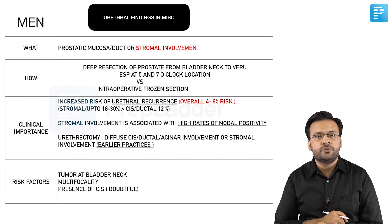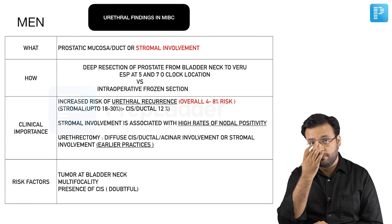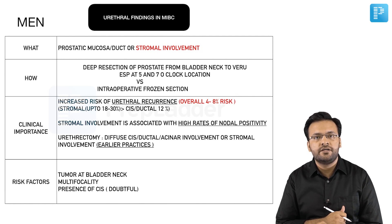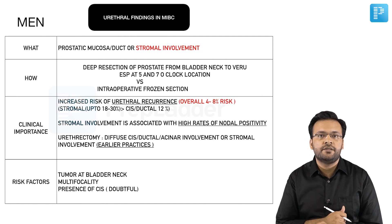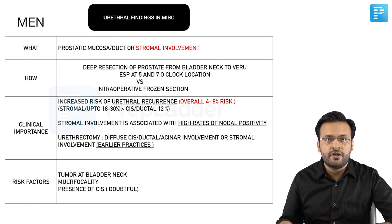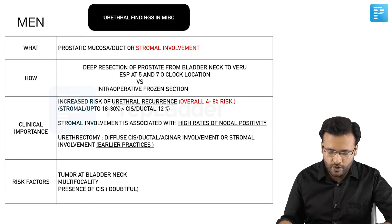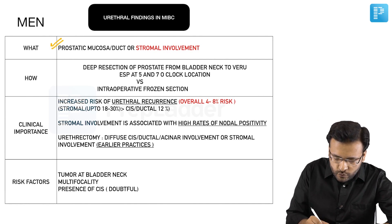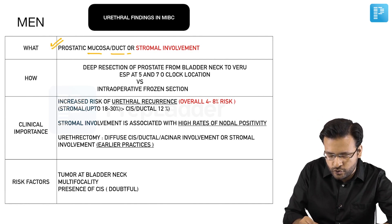In men, during TURBT, if one suspects that the patient has muscle-invasive bladder cancer or non-muscle-invasive bladder cancer that is extensive and warrants an early radical cystectomy, the clinician can choose to evaluate the prostatic urethra in male and the proximal urethra in female. When talking about urethral evaluation in male at the time of TURBT, we want to see involvement of the prostatic mucosa, its ducts, or the stromal involvement.